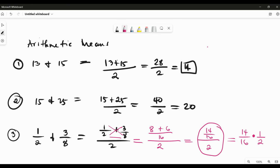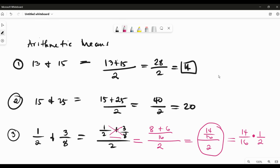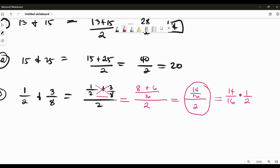So multiply them. Therefore, we now have 14 over 16 times 1 half. We can cancel this one. So this gives us 7. So therefore, our answer is 7 over 16. This is our arithmetic mean.